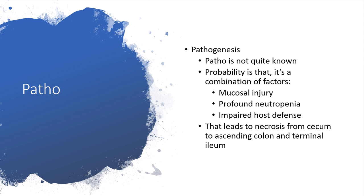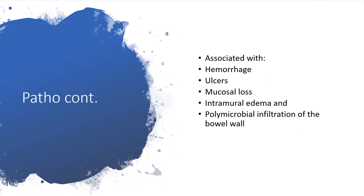The pathogenesis is not quite known, but there is likely a combination of factors. One factor is mucosal injury — injury to the mucosal lining of the intestine — in someone with profound neutropenia. With neutropenia, the immune system is compromised, with impaired host defense. That will lead to necrosis from the cecum to the ascending colon and then to the terminal ileum. It is associated with hemorrhage. When there is mucosal lining damage, that leads to ulcer, hemorrhage, and mucosal loss. When inflammatory cells set in, there will be edema.